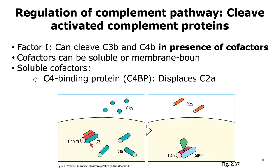Another complement regulatory protein that helps in disabling the complement pathways is Factor I. Factor I is made by host cells and can cleave C3B and C4B in the presence of other proteins that function as cofactors. These cofactors can be soluble or membrane-bound proteins.